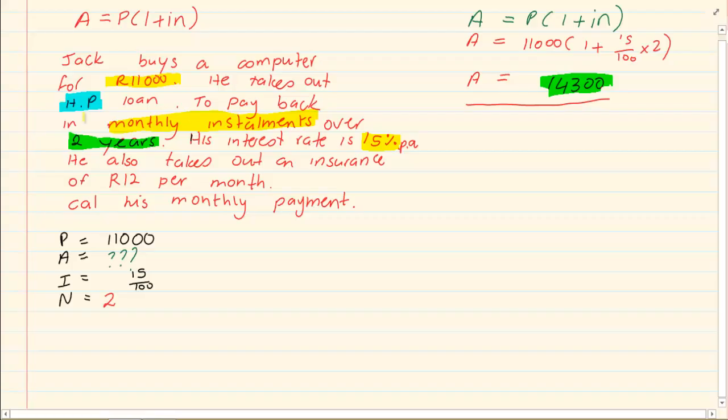Now if he is going to take it over 2 years then how many months are there in 2 years? There are 24 months. So he is going to take the 14,300 and he is going to divide it by 24 because they had said 2 years.